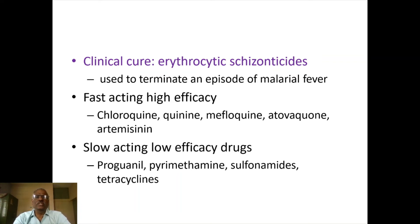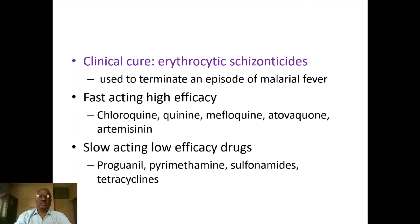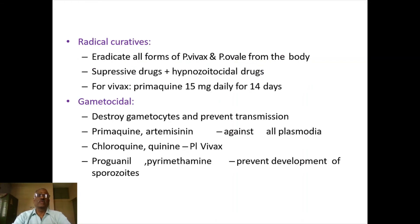Fast-acting erythrocytic schizonticides include chloroquine, quinine, mefloquine, and artemisinin. Slow-acting ones include primaquine, pyrimethamine, sulfonamides, and tetracycline. Radical curatives eradicate all forms of Plasmodium vivax and Plasmodium ovale from the body. This is achieved with primaquine, 15 mg daily for 14 days. Gametocidal drugs act against microgametocytes and macrogametocytes; these include primaquine, artemisinin, proguanil, and pyrimethamine.